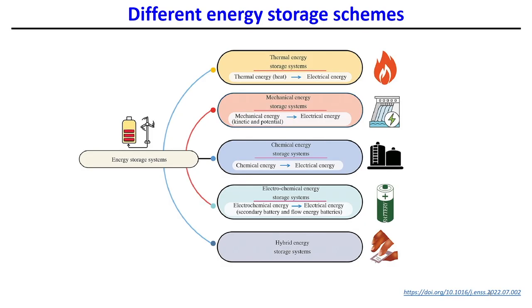In chemical energy systems, we store energy in the form of chemical energy and then deliver it in electrical form. In electrochemical energy storage systems, we store energy in batteries during off-peak periods and provide the energy back to the grid. In hybrid energy systems, based on the situation, we can integrate multiple energy storage systems.